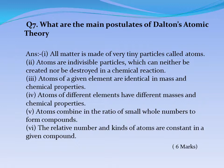Question No. 7: What are the main postulates of Dalton's atomic theory? Answer: 1. All matter is made of very tiny particles called atoms. 2. Atoms are indivisible particles which can neither be created nor be destroyed in a chemical reaction. 3. Atoms of a given element are identical in mass and chemical properties. 4. Atoms of different elements have different masses and chemical properties. 5. Atoms combine in the ratio of small whole numbers to form compounds. 6. The relative number and kinds of atoms are constant in a given compound.